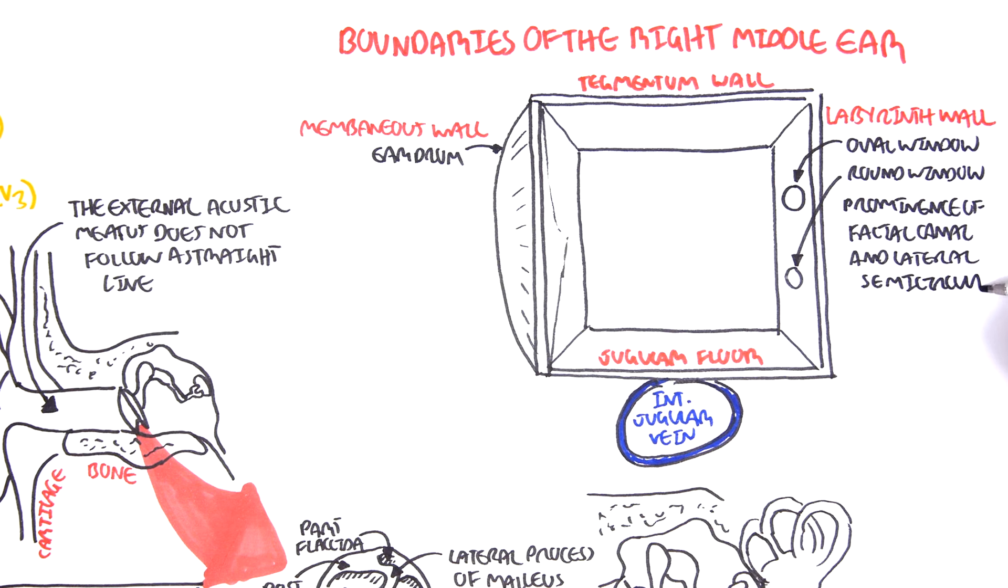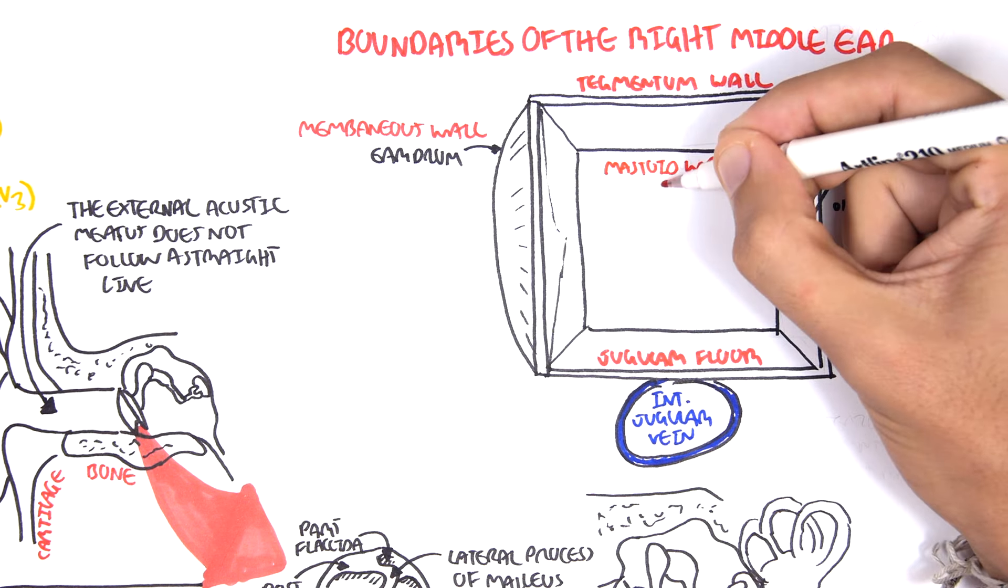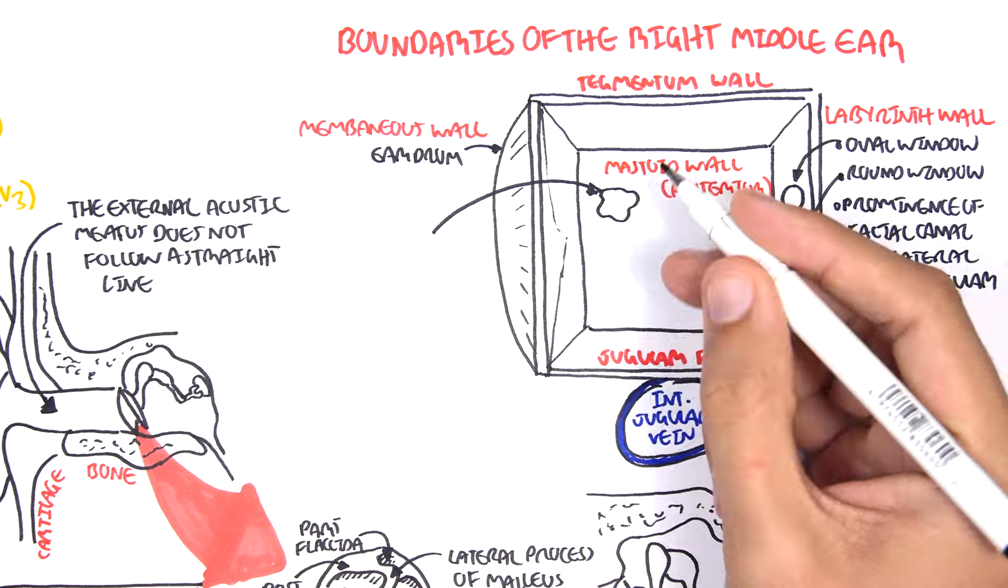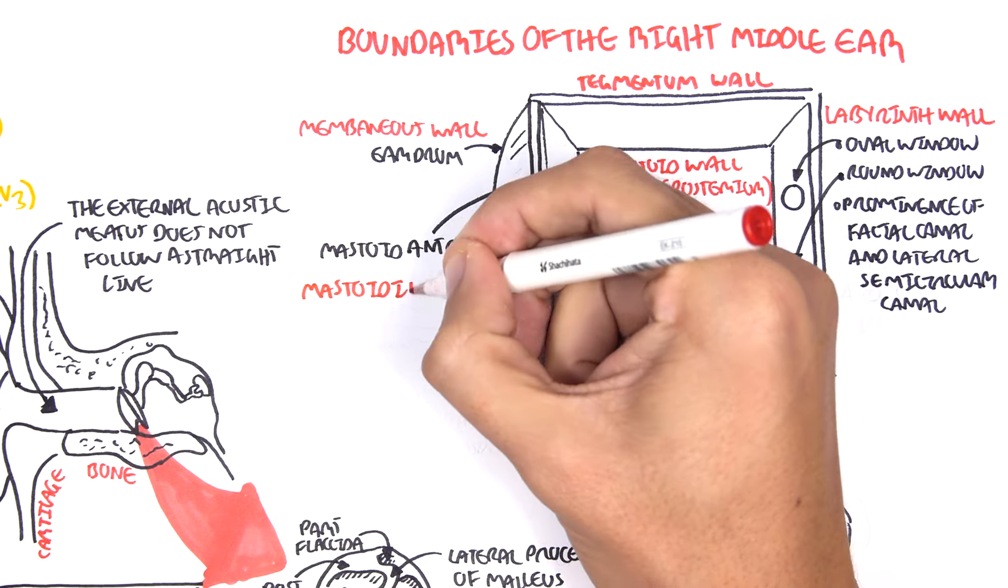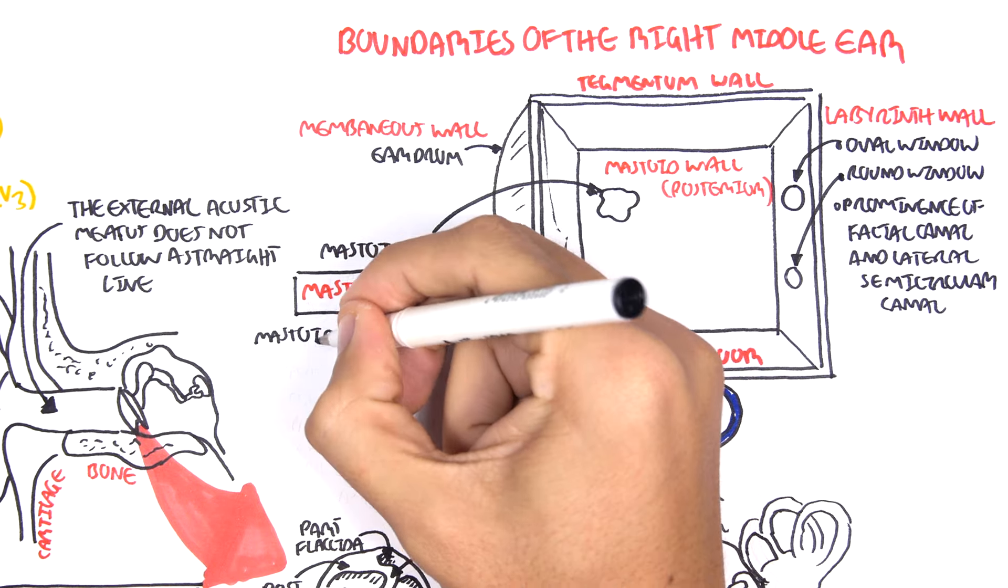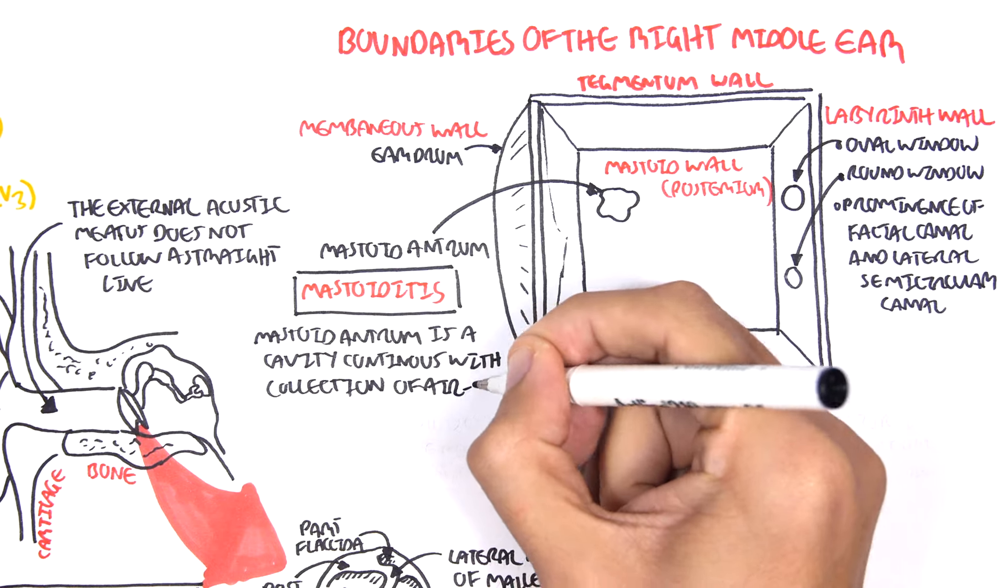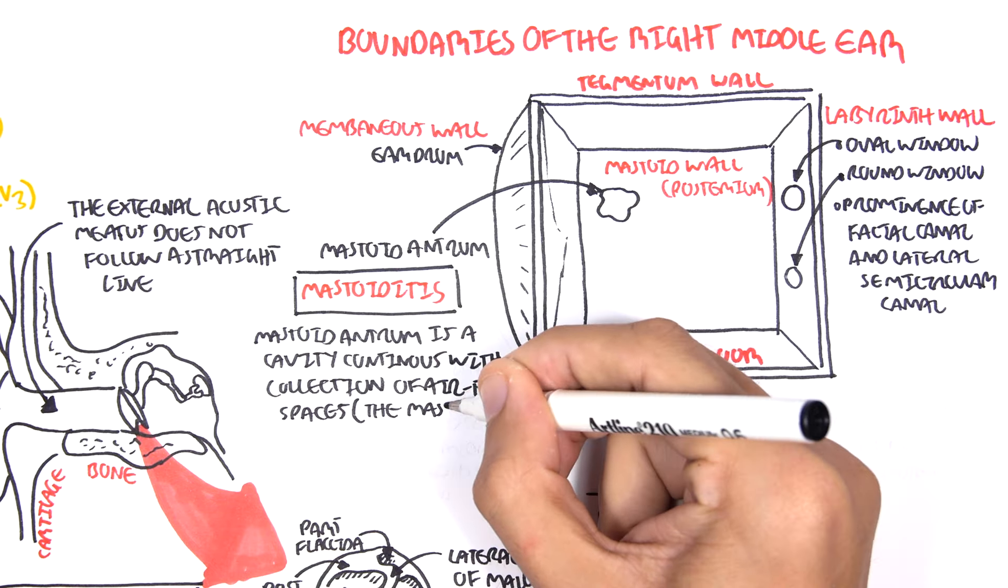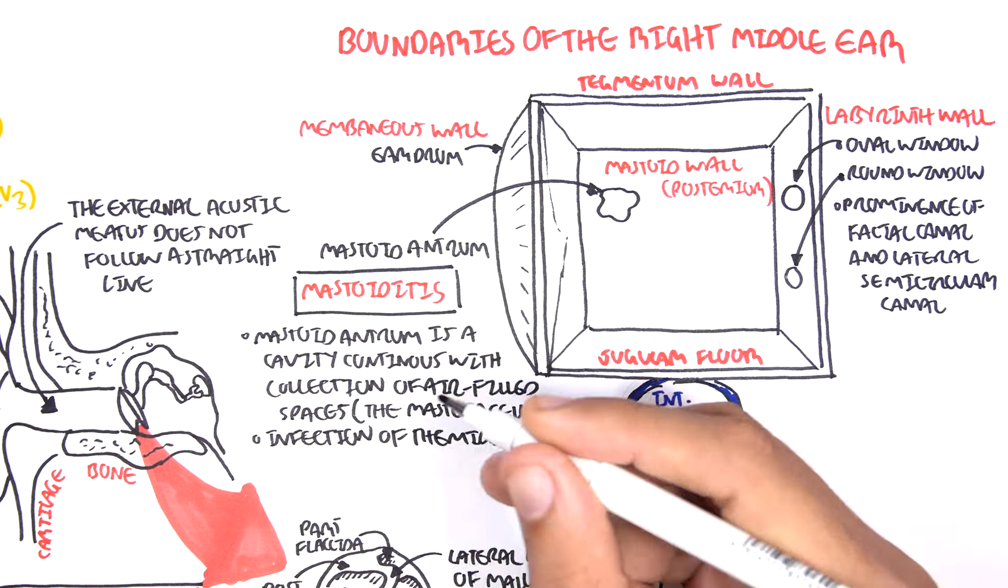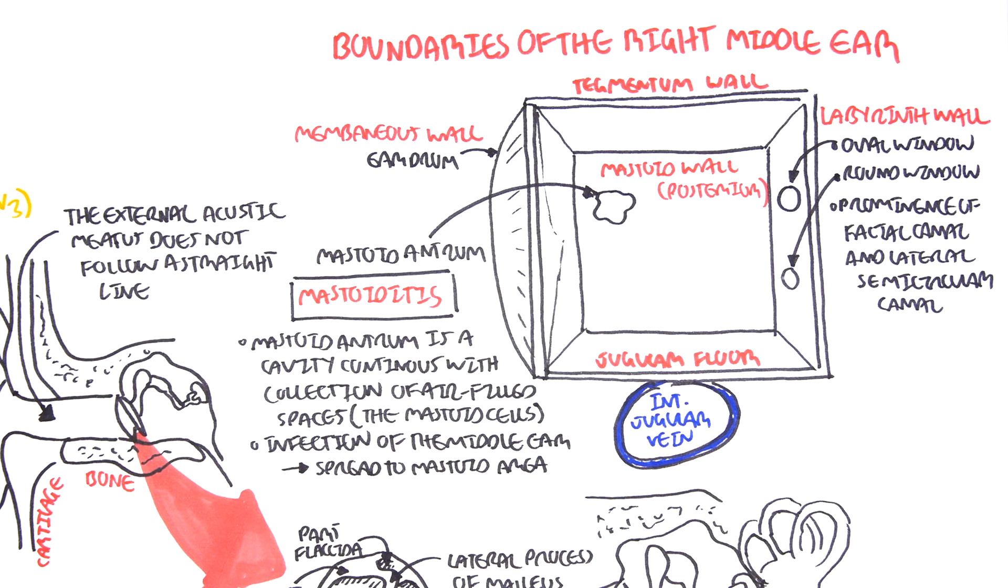The posterior wall is known as the mastoid wall, because here is where we find the mastoid bone. On this wall, we can find the mastoid antrum. The mastoid antrum is important because it is relevant to mastoiditis. The mastoid antrum is a cavity continuous with collection of air-filled spaces known as the mastoid cells. Infection of the middle ear can spread to these mastoid cells and cause mastoiditis, which is very painful.